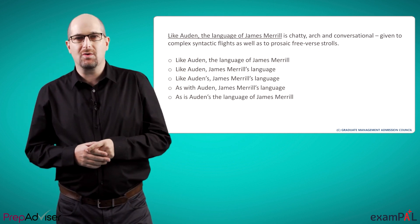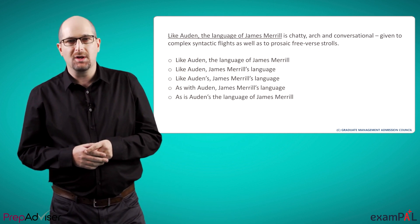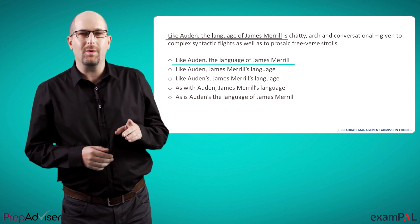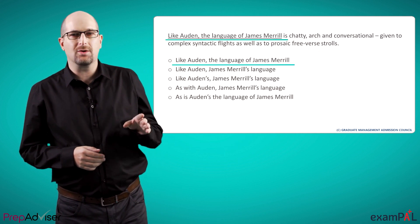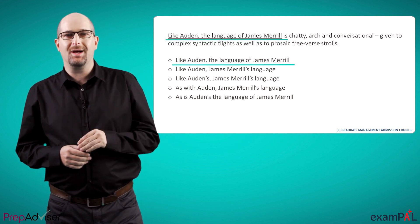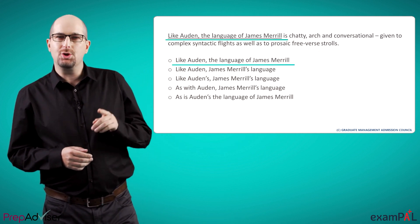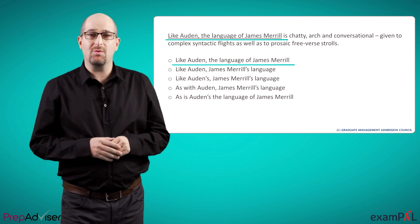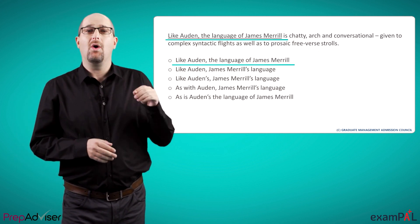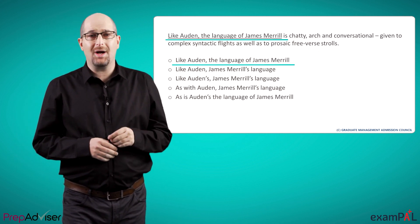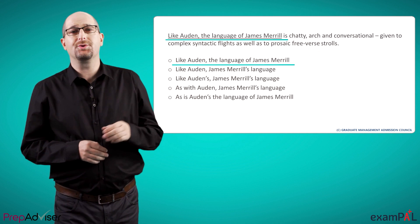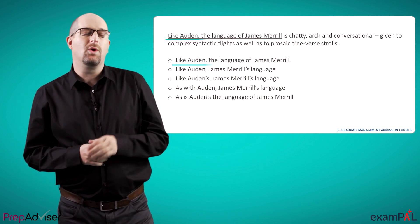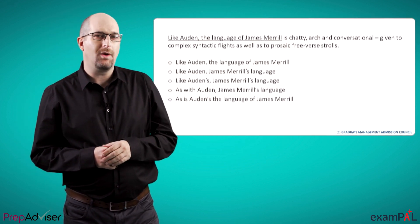In each sentence correction question, the first answer choice, A, will always be identical to the underlined section in the question. Choosing it means there's nothing wrong with the original sentence. All four other options are alternatives to the original phrasing, only one of which can be correct.